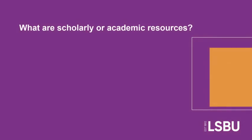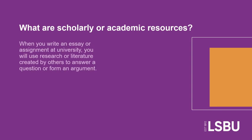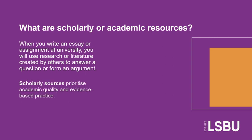So let's start by addressing learning point one: what are scholarly resources and how do they differ to popular resources? When you write an essay or assignment at university you will use research or literature created by others to answer a question or form an argument. It's important that you use scholarly sources when you do this, as these sources prioritise elements such as research quality, objectivity and evidence to produce accurate knowledge for the discipline.